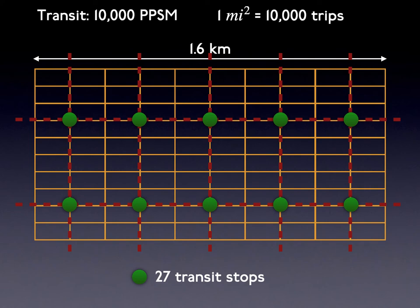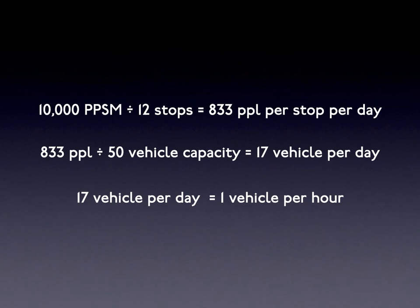The four stops at the outer corners are shared with four other areas, and the eight non-corner stops at the perimeter are shared with two other areas, while five stops are internal to the one-mile square. This gives us 12 equivalent dedicated stops for the area. With 10,000 persons per square mile and 12 stops, each stop serves 833 people per day. If transit vehicles carry 50 people each, that is 17 full transit vehicles per day.